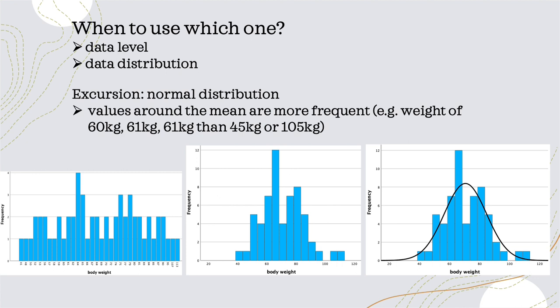The frequency would be one for each value, because values can be slightly different — 64, 64.1, or 64.2. It would be very difficult to see the frequency. This is why we group values together into little intervals, so we can see in which area of the scale most values lie.